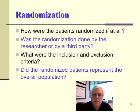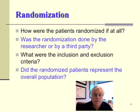Randomization. How were the patients randomized, if at all? Was the randomization done by the researcher or by a third party? And what were the inclusion and exclusion criteria? A very important component of this question. Did the randomized patients represent the overall population? Very important questions.